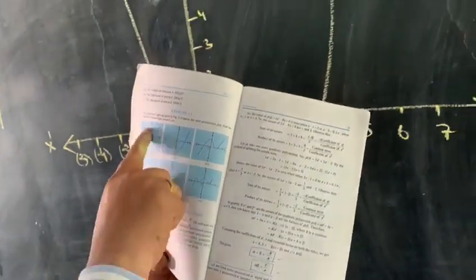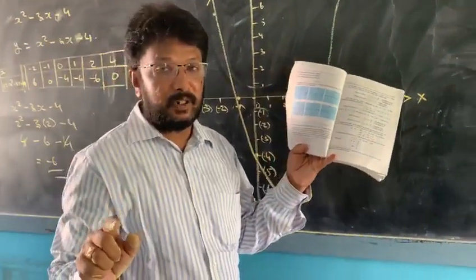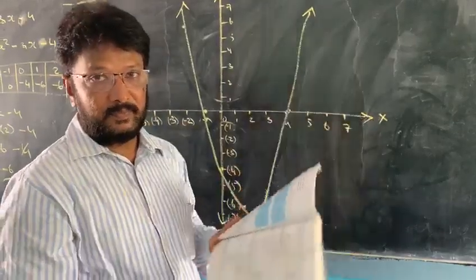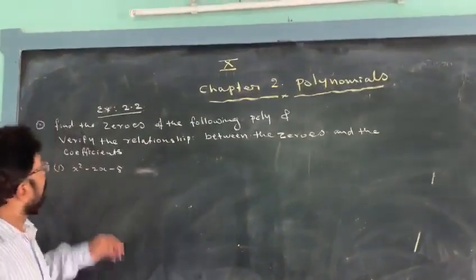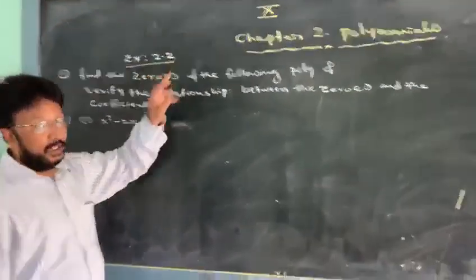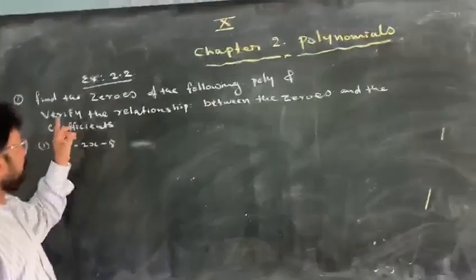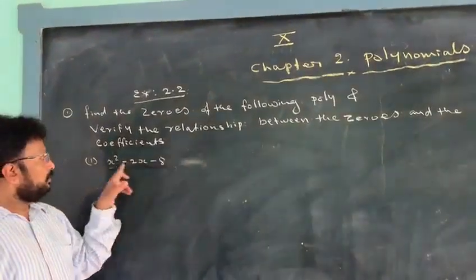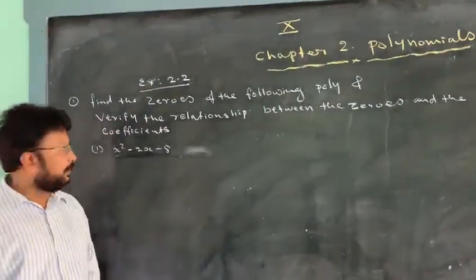So this is the first exercise — you draw this. I think everybody is having this book, so do this exercise. Now we will start exercise number 2.2. I have given the formula for finding alpha plus beta, so here first we have to find the answer using the factorization method.